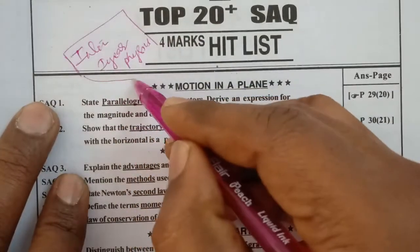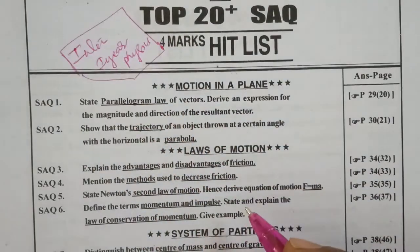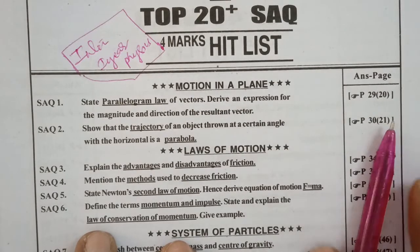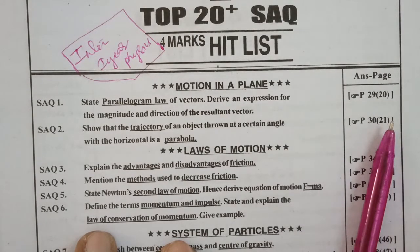These are very important 4 marks questions. 4 marks questions from 8 chapters. So total, first year physics intermediate first year physics has 14 chapters, but 8 chapters have 4 marks questions.